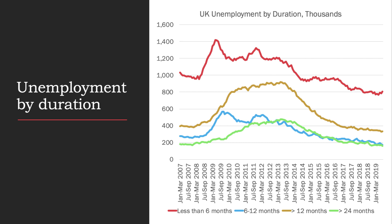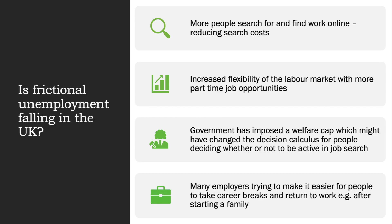That figure stayed pretty high for two or three years. Obviously the recession cut the number of job vacancies and openings. But in the last five or six years there has been quite a significant fall in short-term unemployment, down to around 800,000 people — interestingly, roughly matching the number of job vacancies. So frictional unemployment has come down quite a bit over the last five to six years.